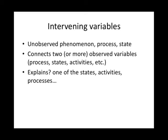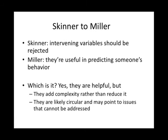For example, we explain a student's aggression or hitting a teacher because of anger, but we still don't understand the anger — so it doesn't really do us any service. It turns out kids hit teachers or each other for a variety of different reasons, not just because they're angry. A more thorough assessment is needed. Moving from Skinner to Miller: Skinner rejected intervening variables, but Miller thought they were useful in predicting behavior.